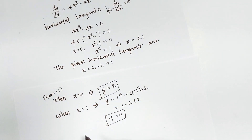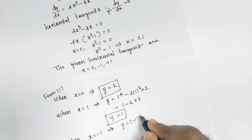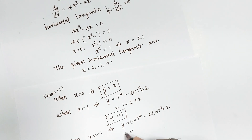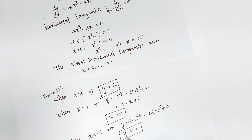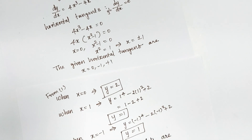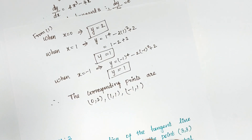When x equal to minus 1, you will get y equal to 1. Therefore, the corresponding points are: when x equal to 0, y equal to 2; when x equal to 1, y equal to 1; when x equal to minus 1, y equal to plus 1.